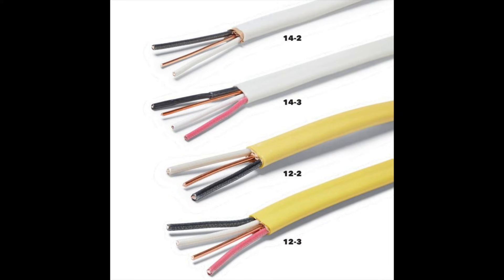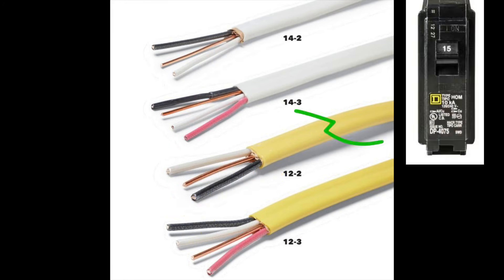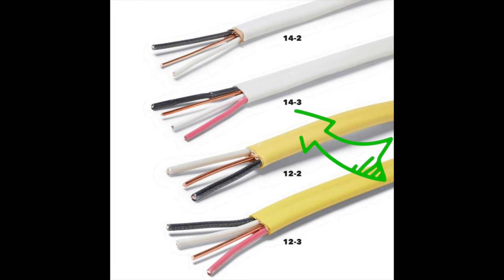So this Romex wire, the 14 means the gauge, how thick the wire is. You can see the 12.2 wire here, that's usually for 20 amp circuits. Most fans, I think, are 15 amp, so a 14.3 Romex wire is what you're going to need if you want to rewire the fan.